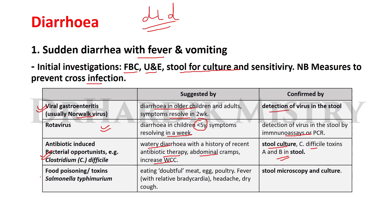Food poisoning due to Salmonella typhimurium is suggested by eating doubtful meat, eggs, or poultry, and is associated with fever, relative bradycardia, headache, and dry cough. It is confirmed by stool microscopy and culture.